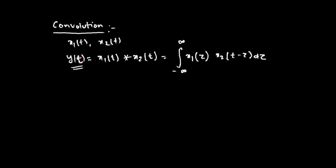It is dτ and not dt, because the resultant is a function of time. If you integrate with respect to τ, you get a function depending on t. If you wrote dt instead, the resultant function would be y(τ), which is incorrect. I won't prove this as the proof is available in standard textbooks, but you should know how to find the convolution of two signals. We will solve examples in later parts of the course.